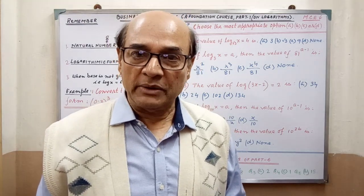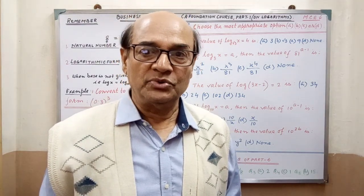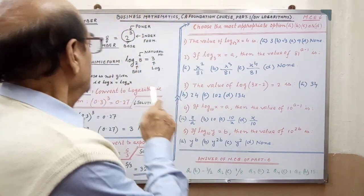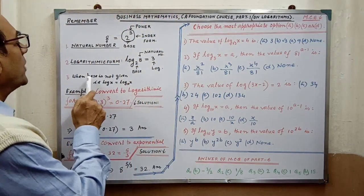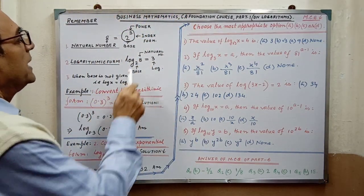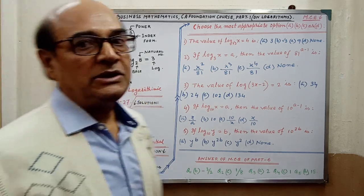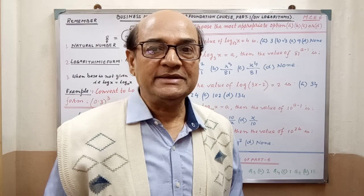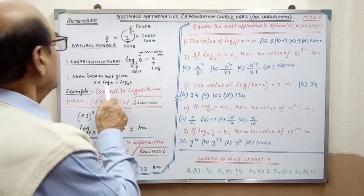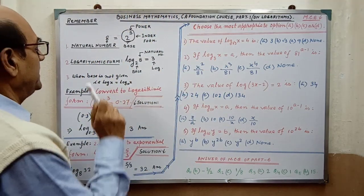Index form to logarithmic form and logarithmic form to index form. And third, when base is not given - here base is given as 2 - if you see base is not given, then you have to consider base is 10. That is, log x equals log base 10.